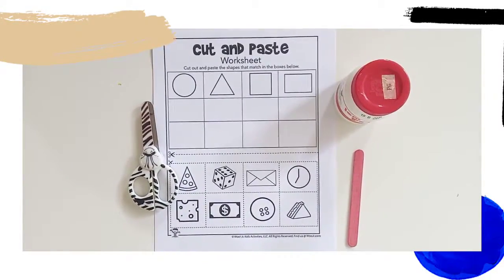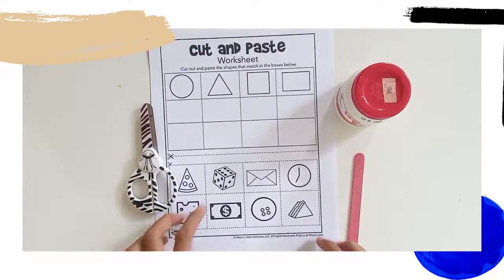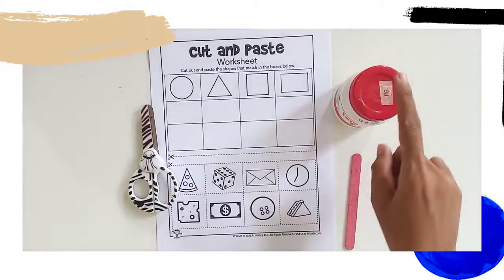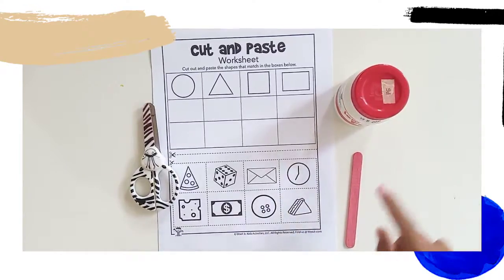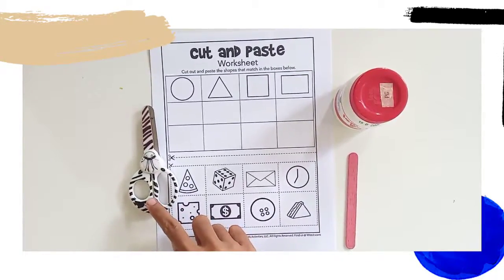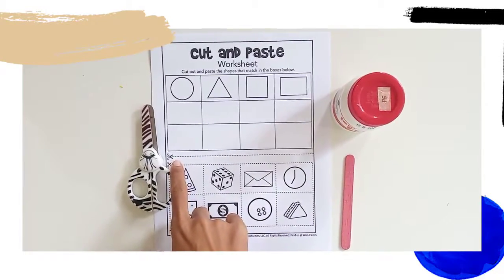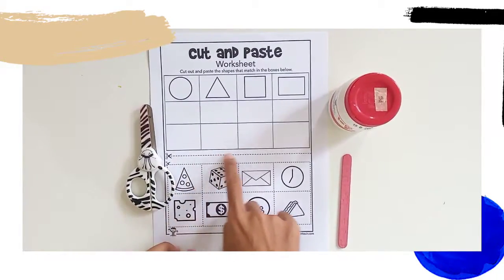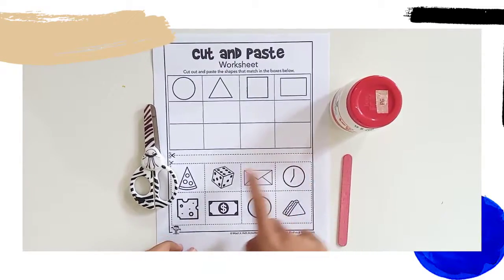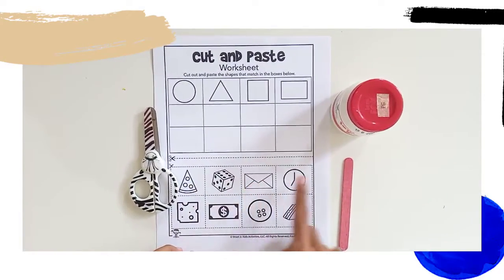Okay, rainbow kids. Now, can you please take this worksheet, glue, stick, and scissor? Okay. Now, first, what you need to do is cut this part and follow me after this, okay?